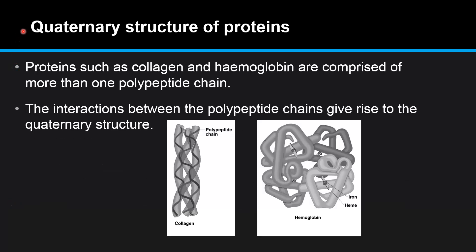Finally we have the quaternary structure of proteins. Proteins such as collagen, shown on the left, and hemoglobin on the right, are composed of more than one polypeptide chain. The interactions between the polypeptide chains give rise to the quaternary structure.